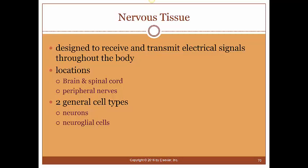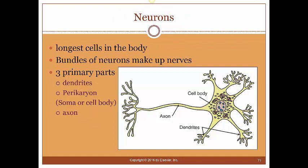Locations where we're going to find nervous tissue are in the central nervous system — the brain and spinal cord — and in the peripheral nervous system where we have our peripheral nerves. The two cell types are neurons and neural glial cells. Neurons are some of the longest cells in the body and are the ones that actually send the impulses. If we bundle a whole bunch of neurons together, that's what makes up our peripheral nerves, and the central nervous system puts them in big bundles as well.